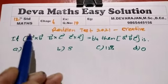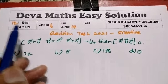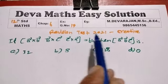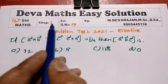Hi students, this is Devo. Now we are going to see a 12th standard maths revision test 2021, creative question, question number 6.